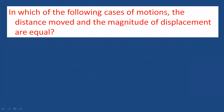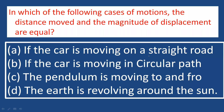In which of the following cases does the distance moved equal the magnitude of displacement? If the object is moving in a straight line in one direction only, the distance and magnitude of displacement are equal. If the object moves in a circular path or to and fro like a pendulum, they are not equal.